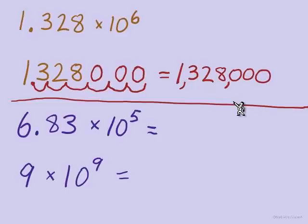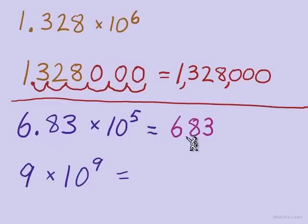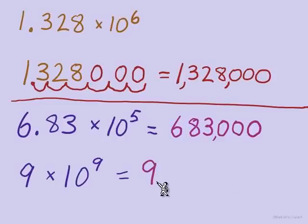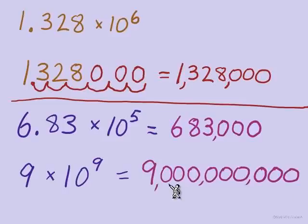Here are two quick examples. For 6.83 times 10 to the fifth: bring over 6, 8, and 3, then move the decimal point five places — the first two jumps pass over the 8 and 3, and the remaining three jumps go through zeros — giving us 683,000. For 9 times 10 to the ninth: bring over the 9; since the point is right behind it, all 9 jumps become zeros, giving us 9 billion.